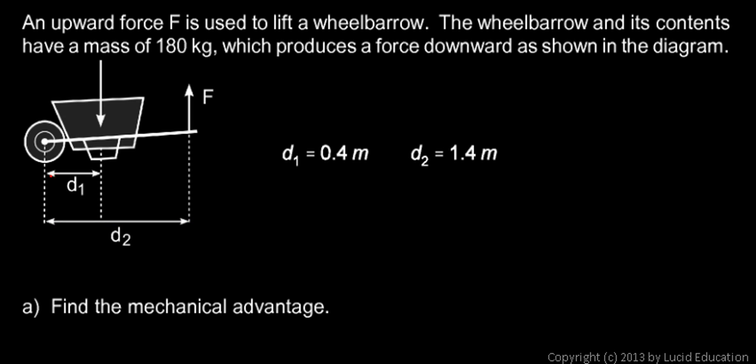The force F that we're pulling up with is at a distance d2 from the fulcrum. We're given those numbers: the short distance is 0.4 meters, and d2, the longer distance, is 1.4 meters. These variables, d1 and d2, have been arranged differently in previous problems. That doesn't really matter. The thing to understand is the ratio of the distances.